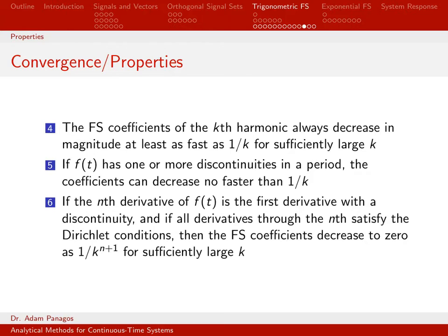Point five tells us an example of when we might see coefficients decay at exactly that slowest rate. That occurs when we have discontinuities. If we have a discontinuity in the period we're looking at — that time interval T-naught — then the coefficients can decrease no faster than 1/k. So anytime we have a discontinuity, we're going to have a divide by n in our term, and 1/n is as fast as they're going to decay.